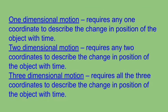When we consider only any one coordinate to describe the change in the position of the object with time, the motion of the object is called one-dimensional motion. Two-dimensional motion of an object is that which requires any two coordinates to describe the change in position of the object with time. And when all the three coordinates specify the change in position of the object with time, the motion of the object is called three-dimensional motion.